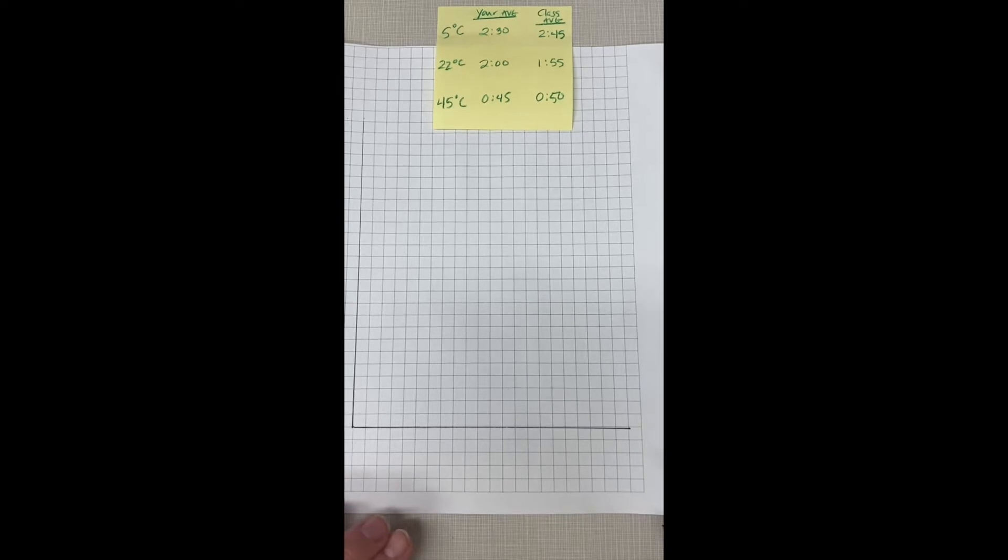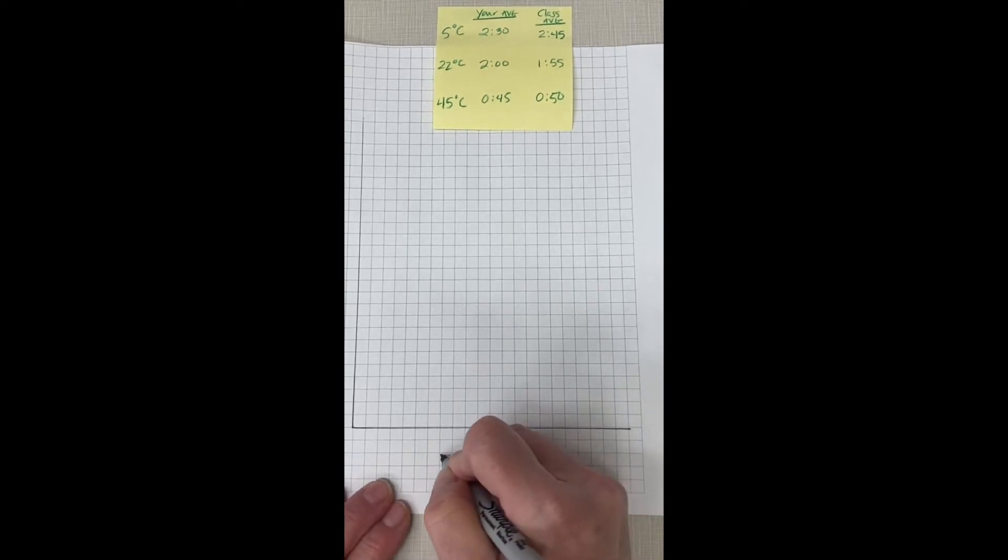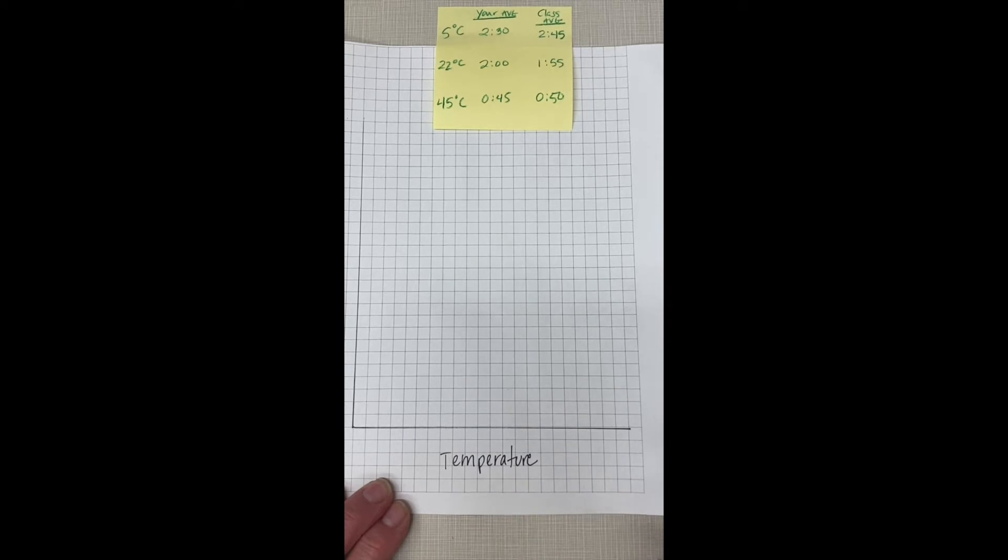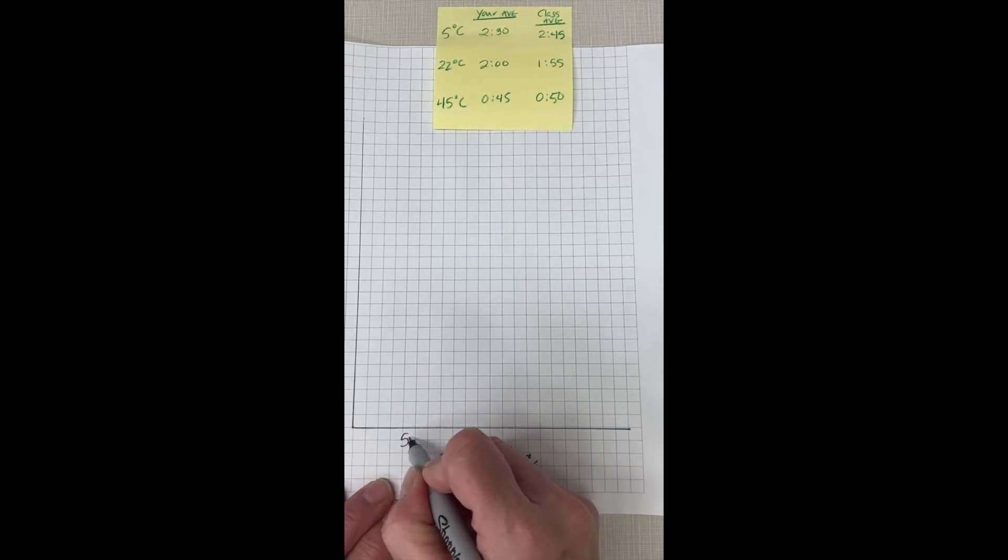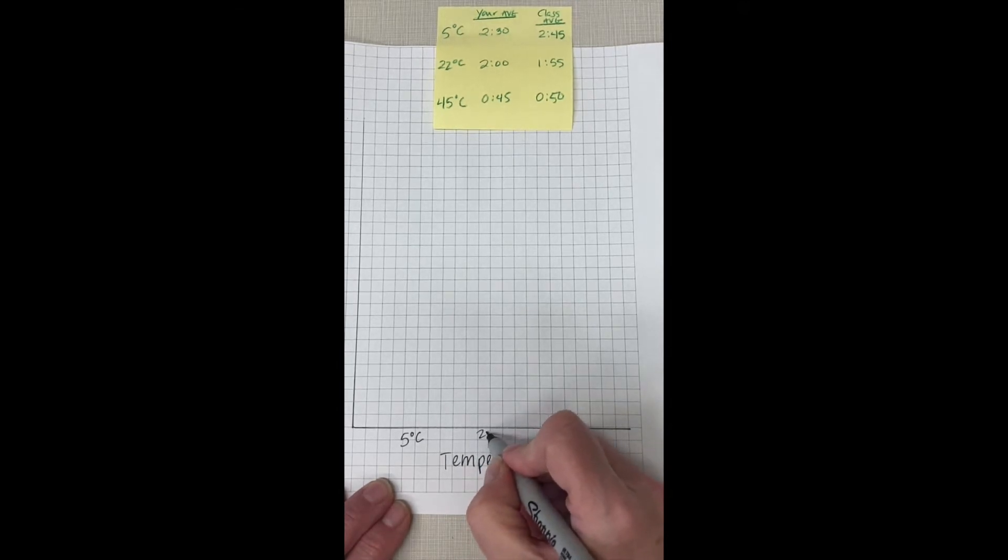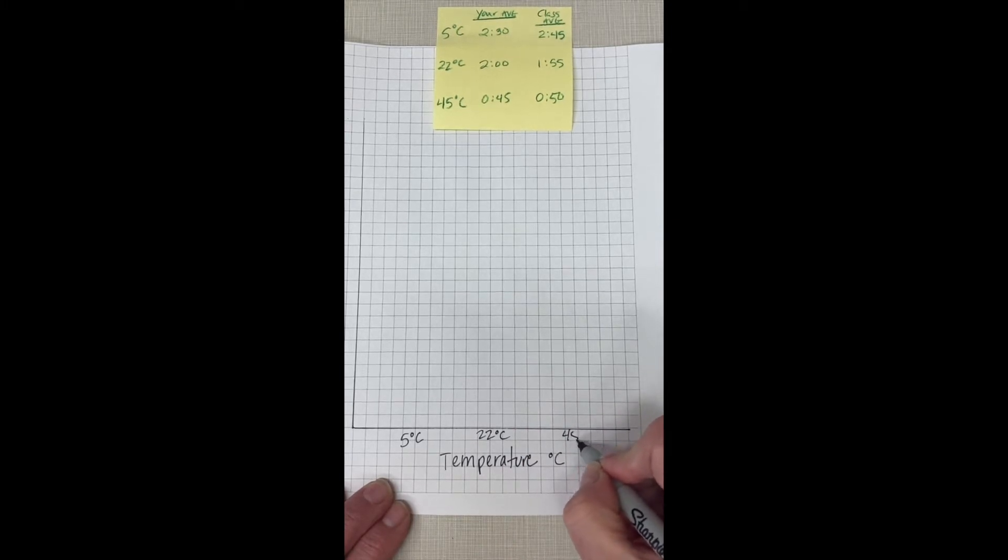So we need to set up our x-axis and the x-axis is going to be your independent variable, which in this case is temperature. And since it's a bar graph we don't really have to be super careful about how far apart our units are. Our temperatures are at 5 degrees Celsius, 22 degrees Celsius, and 45 degrees Celsius. So on here I'm just going to write 5 degrees C and you should always write your units along with whatever your variable is. And then here I'll write 22 degrees C and here I'll write 45 degrees C.